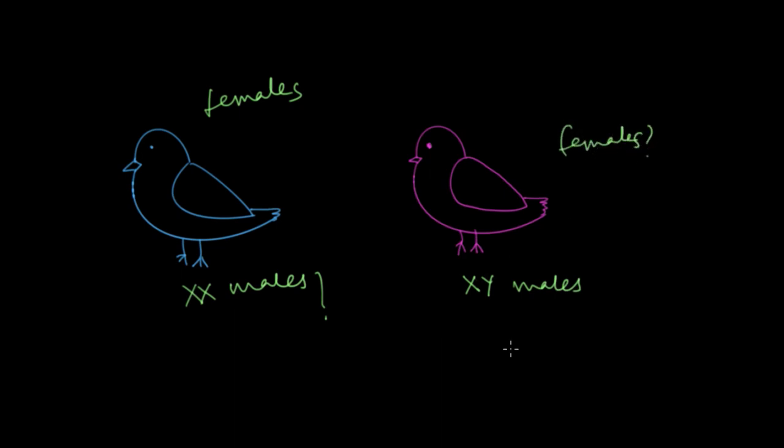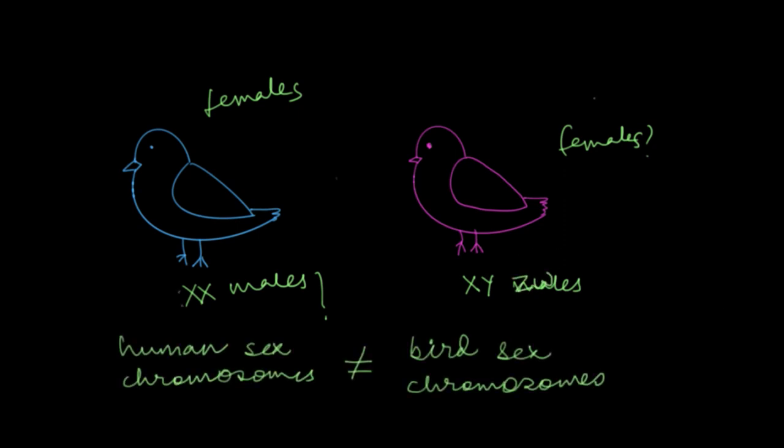Now we would have still tried to make some sense out of this if the human sex chromosomes were exactly like the bird sex chromosomes. But that is not even the case because the human sex chromosomes are nothing like the bird sex chromosomes. I mean, they don't even share a single gene.